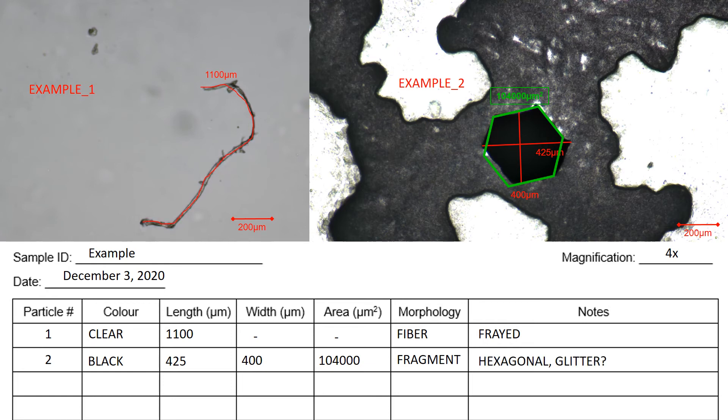And then in the notes I put that it's hexagonal in shape. And I also put glitter with a question mark because we don't know for sure but it looks like glitter when you look at it with your naked eye. And that's everything I have for you. So enjoy.